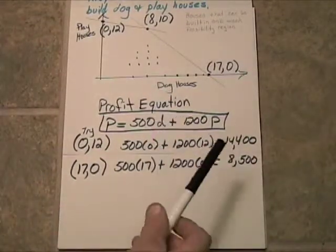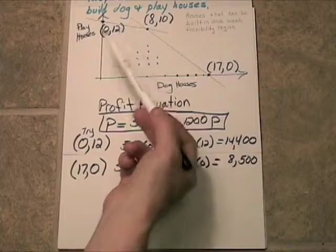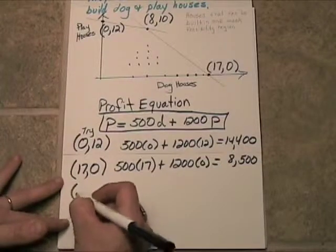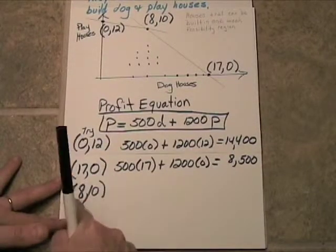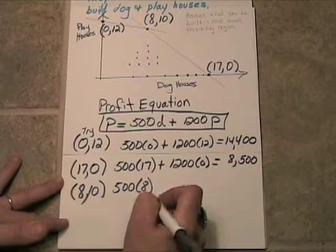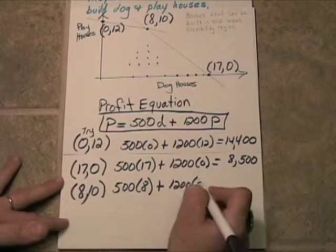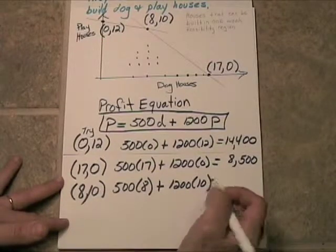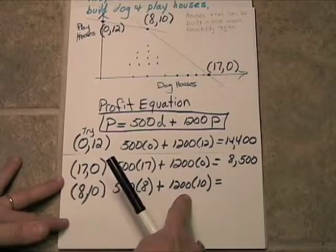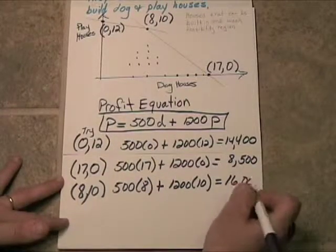You know, maybe a little bit of each will give us a little higher profit than this. Let's see. Let's try 8 and 10. 8 dog houses, 10 playhouses. So, $500 times 8 dog houses plus $1,200 times 10 playhouses. Now, let's see here. Over here, we're going to get $4,000. And over here, we are going to get $12,000, which, look at that, $16,000.